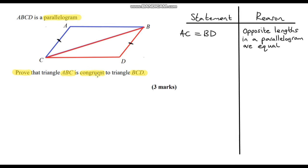The next statement is that length AB is the same as length CD, for exactly the same reason — opposite lengths in a parallelogram are equal. So these two lengths must also be equal. We've now found two pairs of corresponding side lengths that are equal.